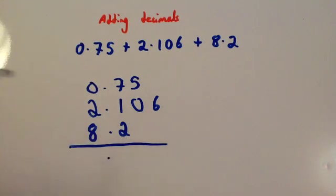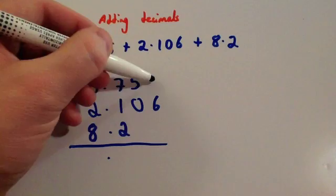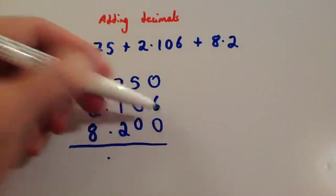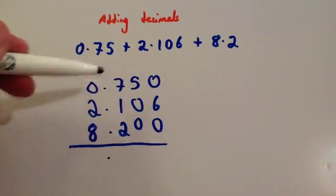I'll put a decimal point here, just to make sure you don't forget it. And if you want to, you can add zeros on to ensure that the numbers keep in the right place value.